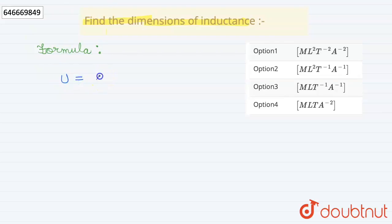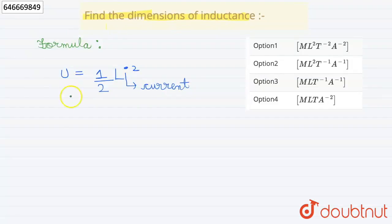Potential energy stored in an inductor is given by half L I squared where I is our current. Okay, now L can be written from here as 2U upon I squared.